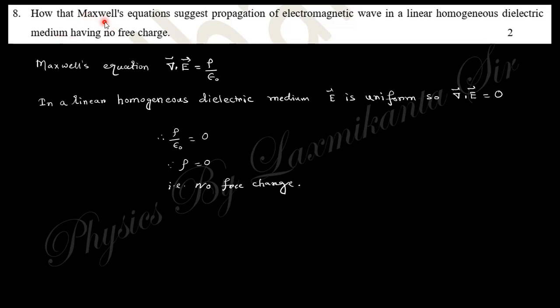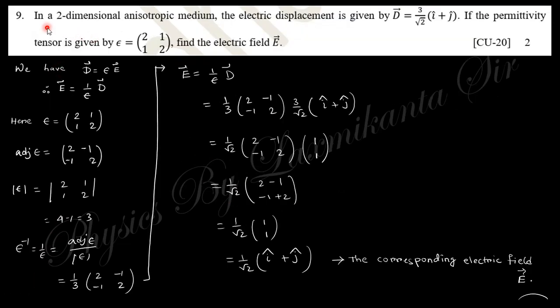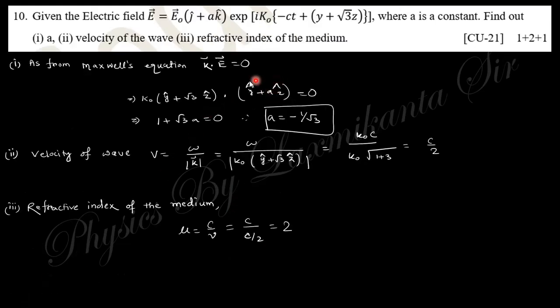How do Maxwell's equations suggest propagation of electromagnetic waves in a linear homogeneous dielectric medium having no free charge? In homogeneous dielectric medium, electric field is uniform, so divergence is equal to zero. D is given here, epsilon is given. What is the value of E? You know D equals epsilon E, so E equals D over epsilon. Find the inverse of epsilon and multiply to D.